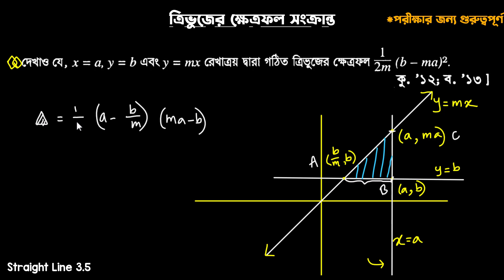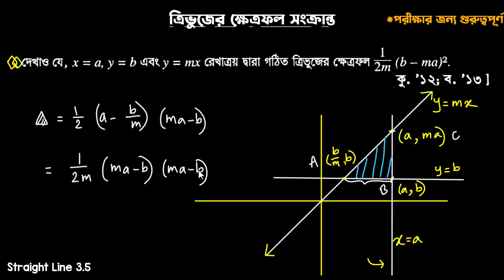I'm going to put it on the second one. So M is the same: ma minus b. That means 1 by twice m into ma minus b. But you can see ma minus b. Therefore I will write 1 by twice m. So I will write ma minus b whole square.